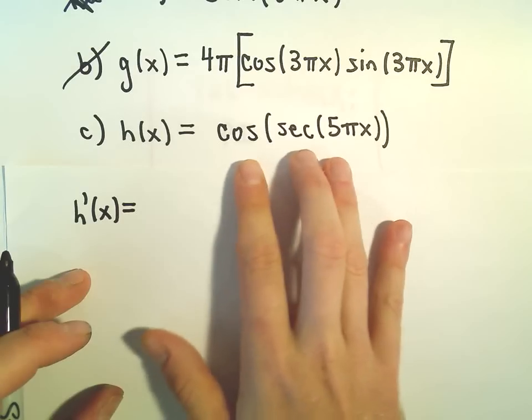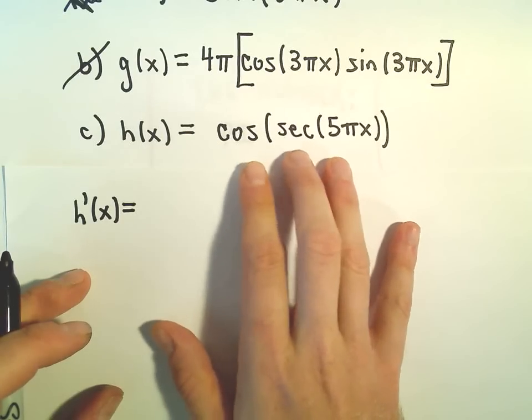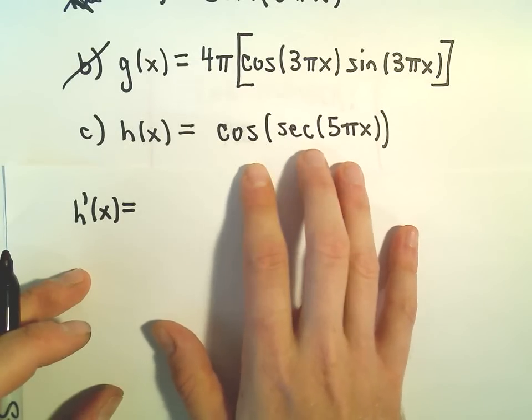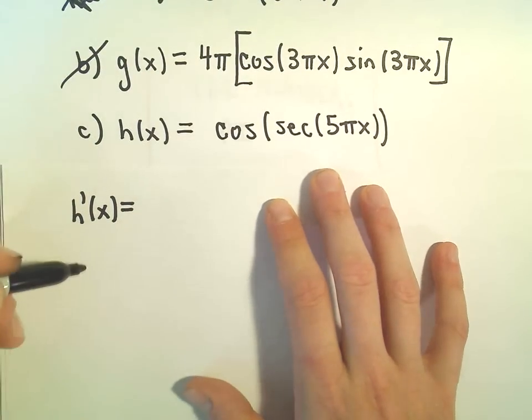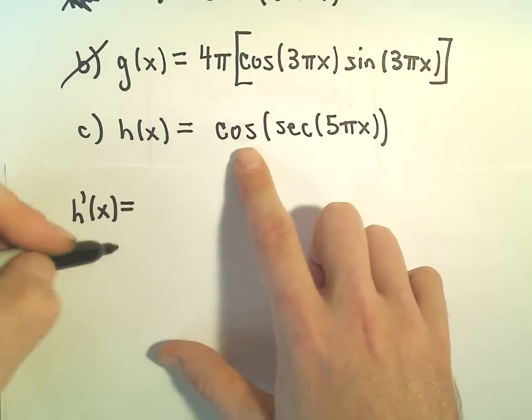That's the first thing I think about. I look at that and my brain is thinking product rule or chain rule. This is just a big composition, so this will just be chain rule. I'm going to jump down a little bit to make sure I have plenty of room.